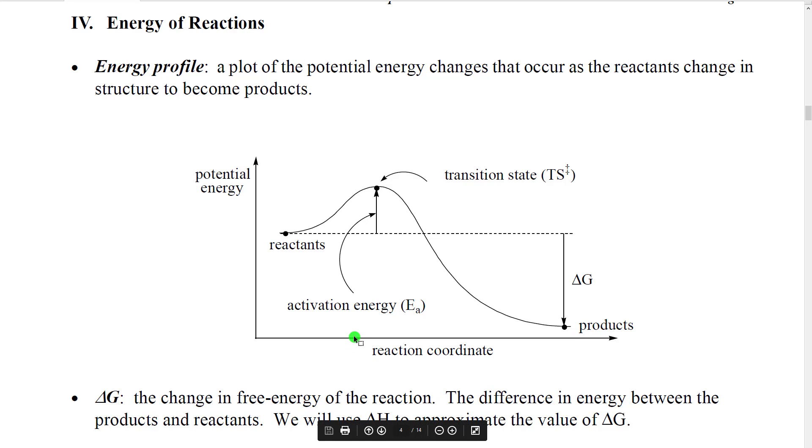If I point to a place on the reaction coordinate, what I'm really in theory pointing to is a structure. The only thing is that we usually don't know exactly what those structures look like because the changes can become quite complex. We imagine that it's changing gradually, but we're not always able to specifically point to what that structure looks like.